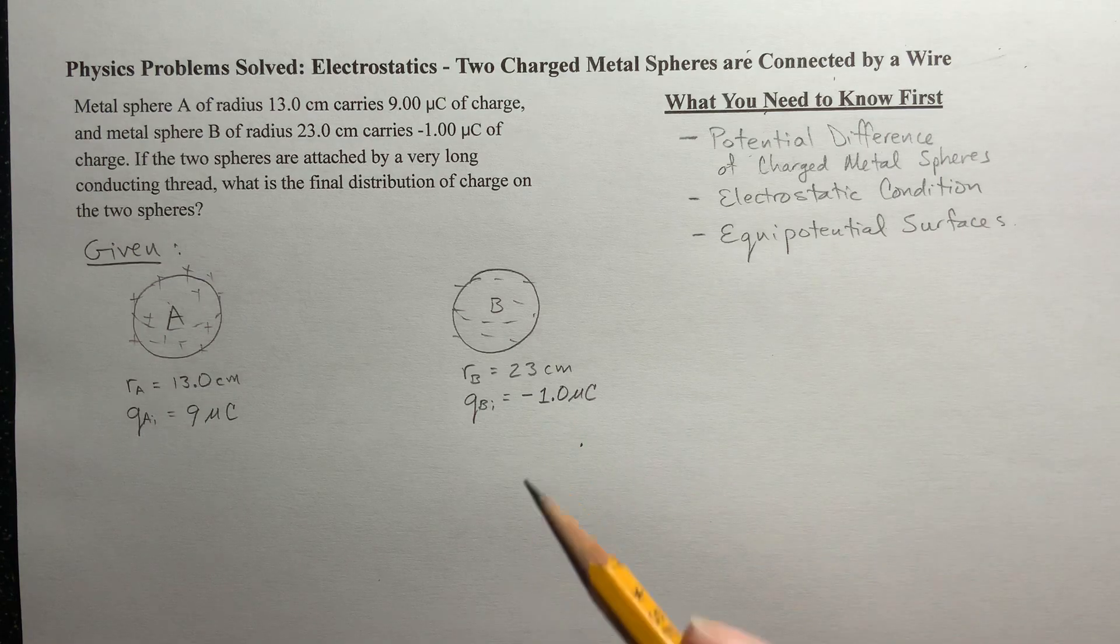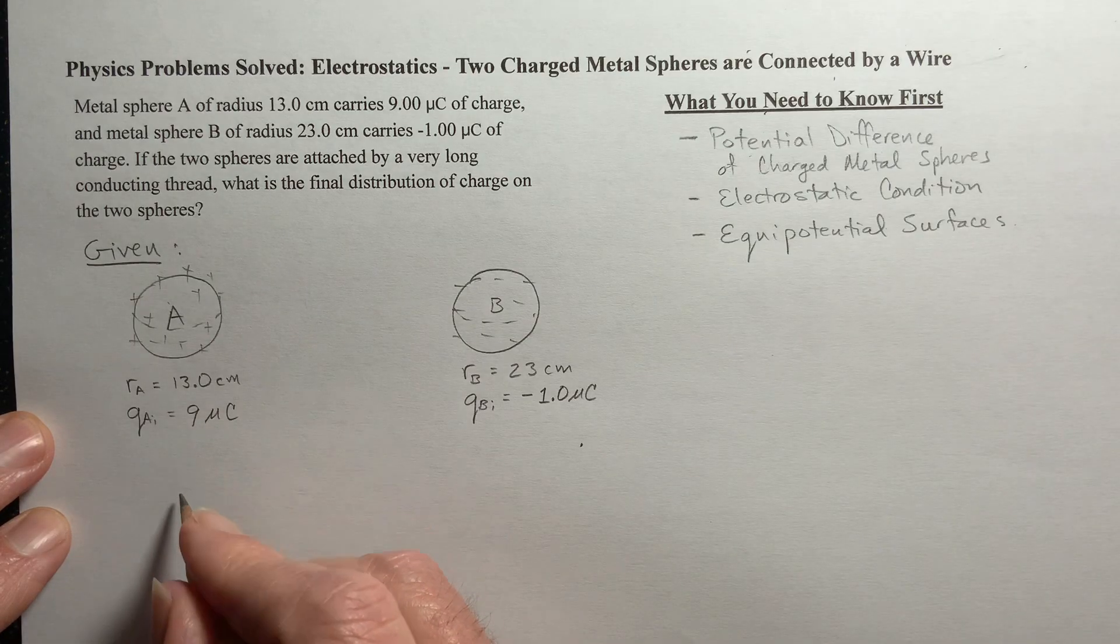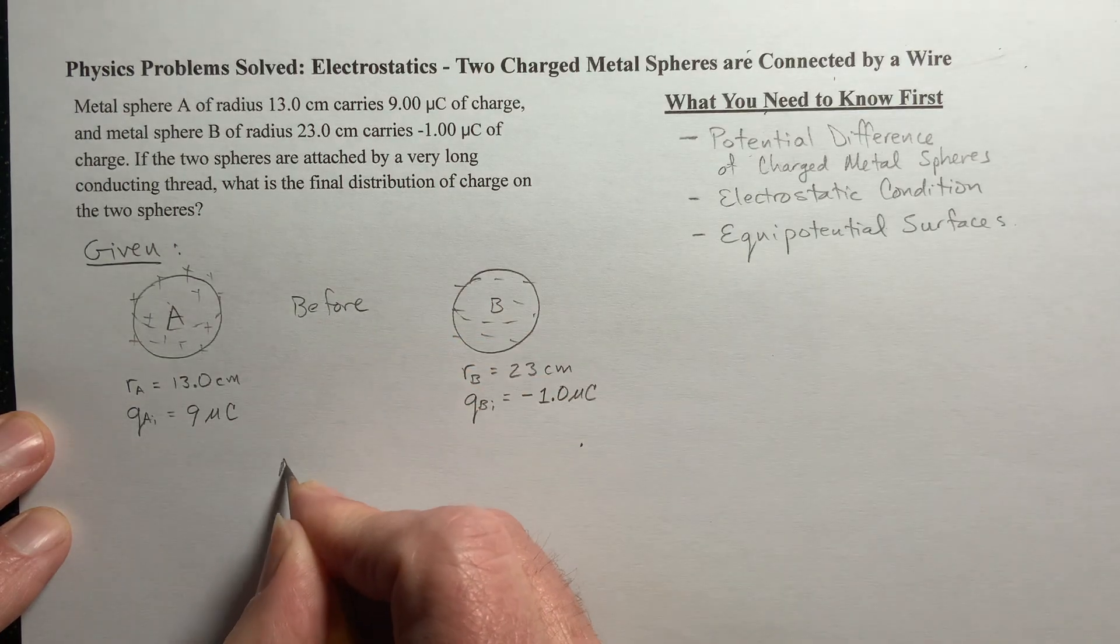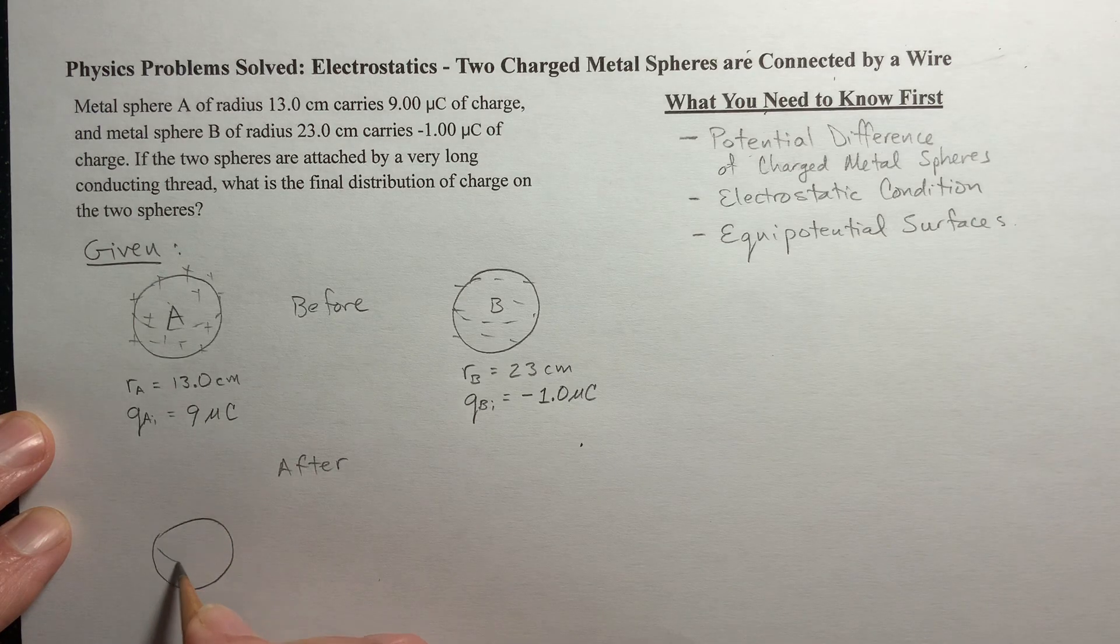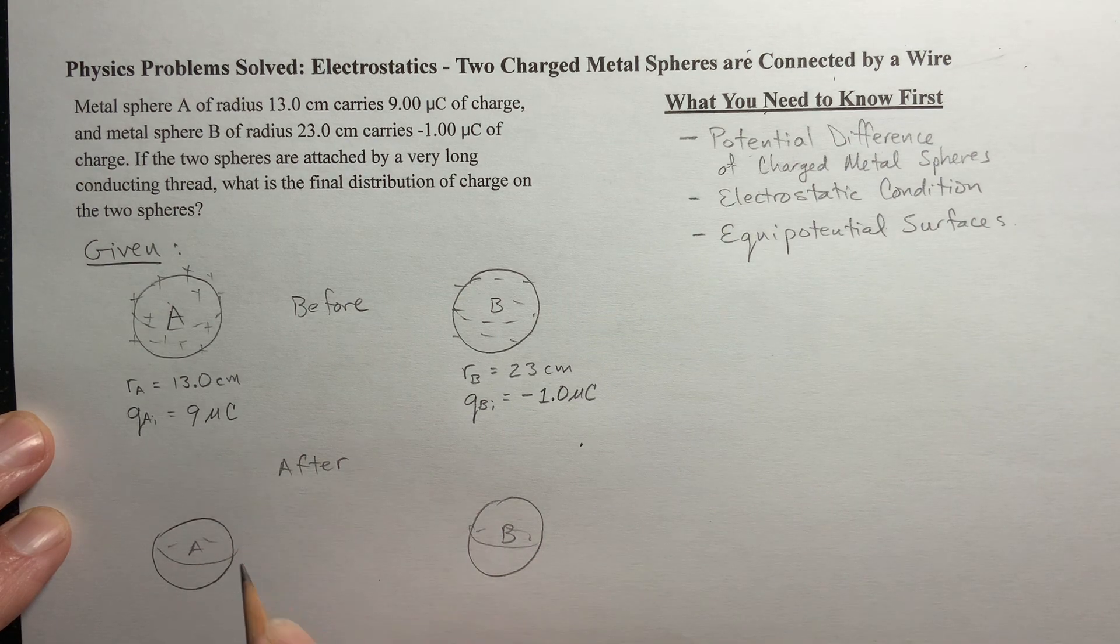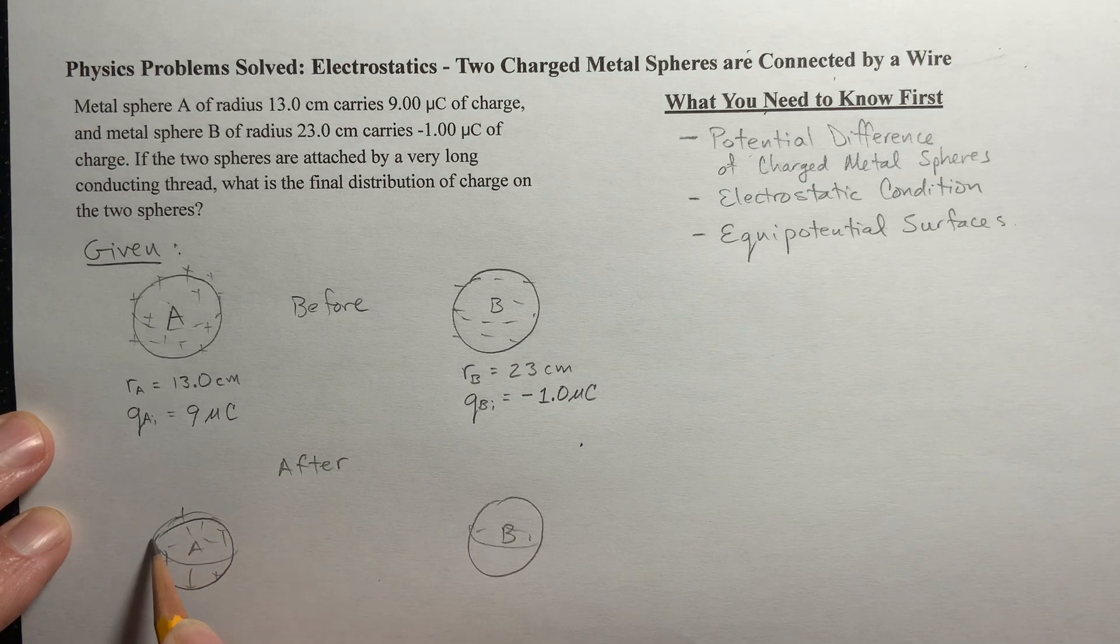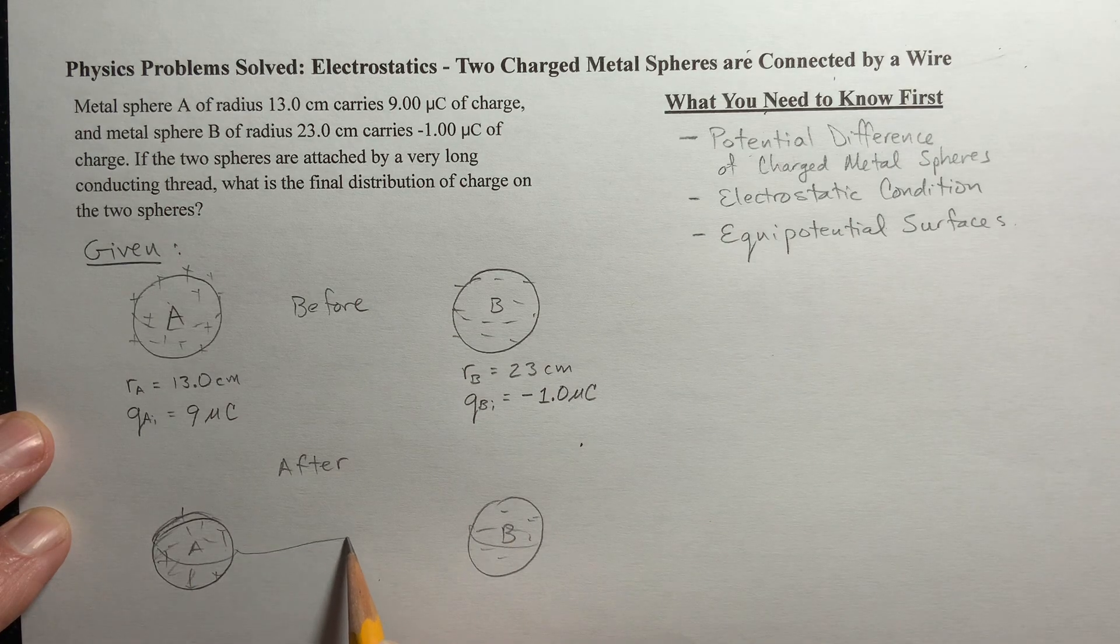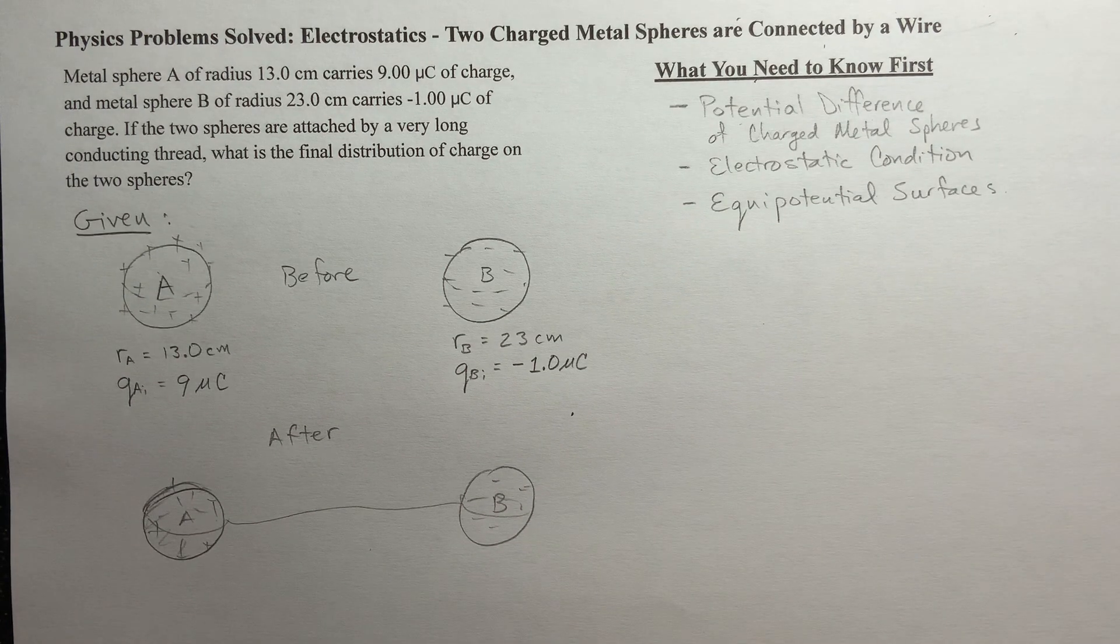Now what we're going to do is this, this is before, and then after. I'll put this before, and then after, then we're going to take these two spheres. And they've got charge on them, right? We're going to connect them with a little tiny thin metal thread.